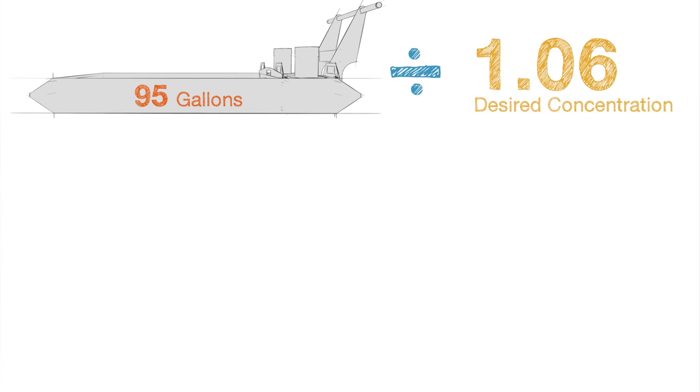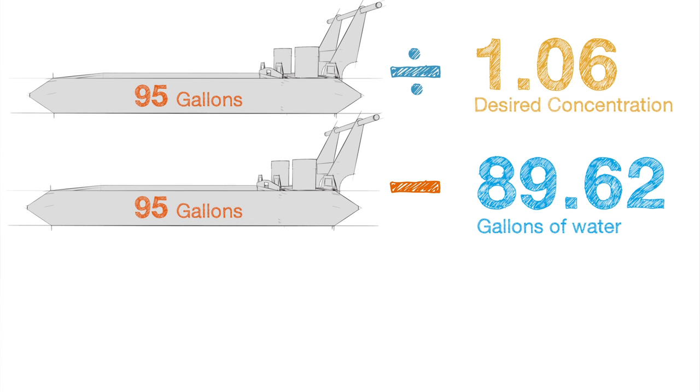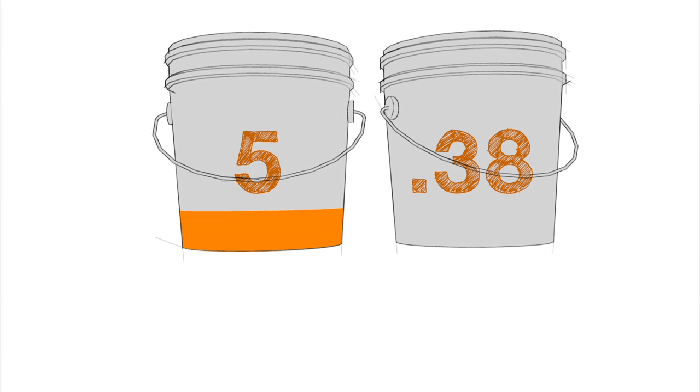Next, we divide our tank size by the 1.06 number, which equals 89.62. So, we need 89.62 gallons of water. Then, we subtract 89.62 from our tank size to get 5.38. So, we need 5.38 gallons of concentrate.